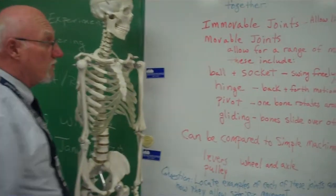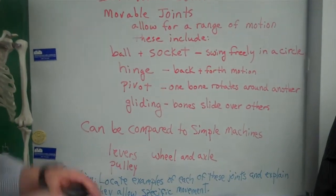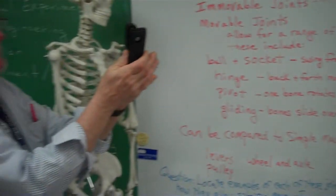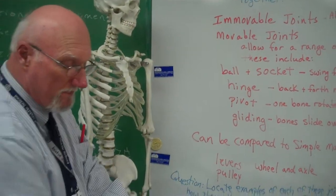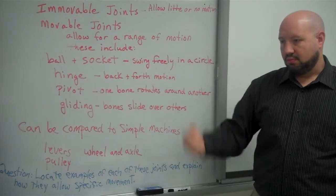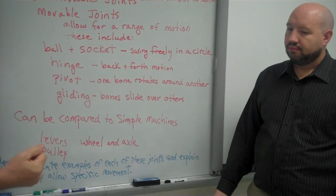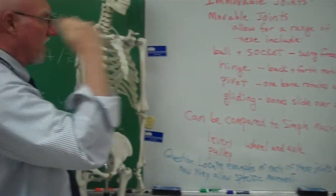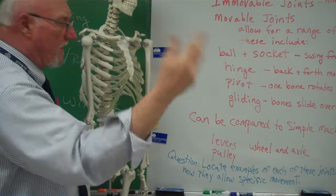The hinge joint allows a back and forth motion. Just like the hinge joint does on a stapler. The hinge joint in your arm allows this backward and forward motion. One direction only. That's it. It doesn't go the other way around.